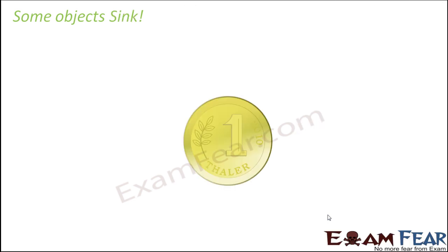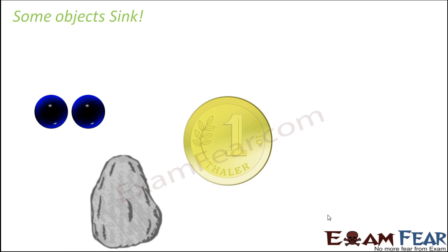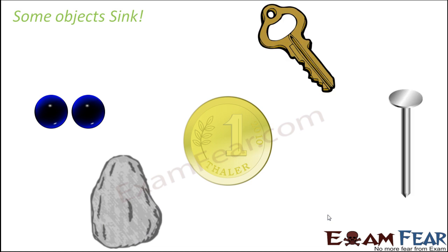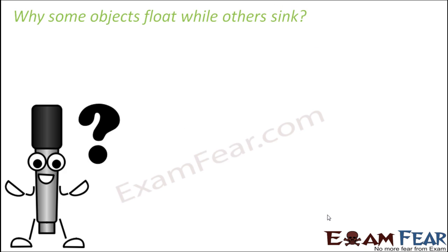On the other hand, there are objects which sink. The best example would be coins made of metal. Marbles also sink in water, as do stones and pebbles. Most metal objects — like a metal key or a metal nail — tend to sink in water.